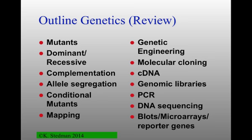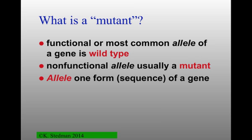We'll also talk about molecular genetics — that's the right-hand side. Genetic engineering, which most people think of as molecular cloning — making many many copies of one particular gene or piece of genetic material. One kind of genetic material to work with are cDNAs or complementary DNAs — copies of messenger RNAs. We'll talk about genomic libraries, the mechanism of PCR, DNA sequencing, blots, microarrays, and reporter genes.